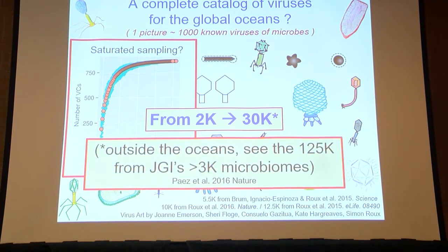One humbling element is that no sooner did we have our dataset together than JGI mined their microbial metagenomes and found well over 100,000 viral genomes, so our ocean data pales in comparison to the global dataset. But it's exciting to see so much viral genomic cataloging happening.